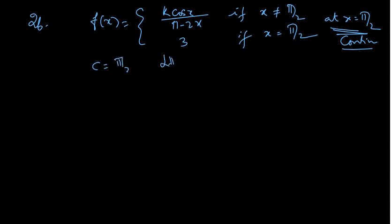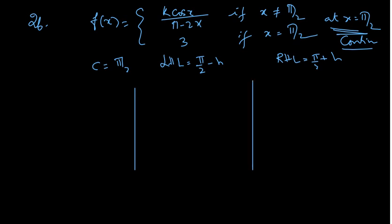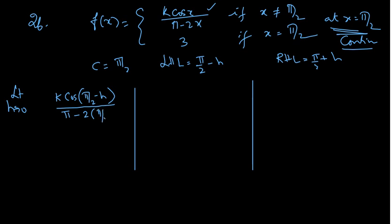Our c value here is π/2. So the left hand limit will use π/2 minus h. Limit h tends to 0 of k·cos(π/2 minus h) divided by [π minus 2·(π/2 minus h)]. This step is important: cos(π/2 minus h) is nothing but sin h — this is from complementary angles.